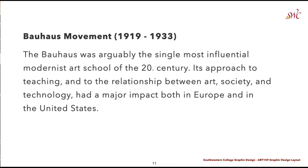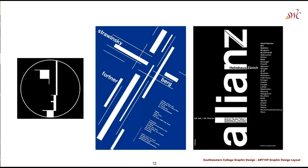This brings us to the Bauhaus movement, which was very short-lived, running only from 1919 to 1933. The Bauhaus was arguably the single most influential modernist art school of the 20th century, and its approach to teaching and the relationship between art, society, and technology had a major impact in both Europe and the United States. Bauhaus is renowned for its unique aesthetic combining fine arts with crafts, as well as its enduring influence on modern and contemporary art.